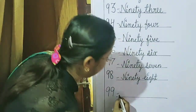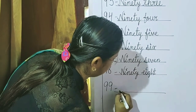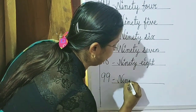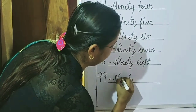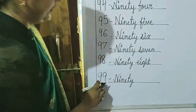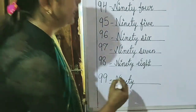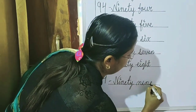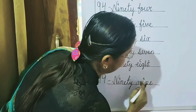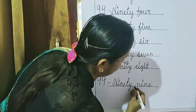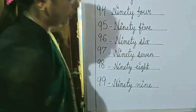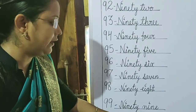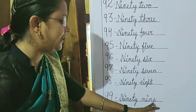Then, 99. Spelling of 99: N-I-N-E-T-Y for 90. Then, 9 — N-I-N-E. So N-I-N-E-T-Y plus N-I-N-E gives us 99.